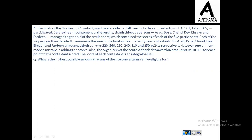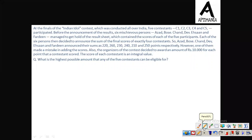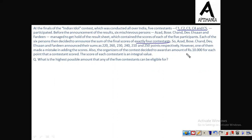I would suggest you to pause the video here and try this question once, then see the solution after that. So let's start with the solution part. First of all, we have to see that A, B, C, D, E, F each announced the sum of exactly 4 contestants. So who can be those 4 contestants? We need to select 4 out of 5, which can be done in 5C4 ways. Now 5C4 is simply 5, so we have 5 ways to do the same.